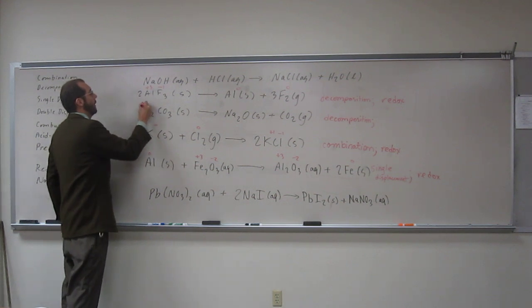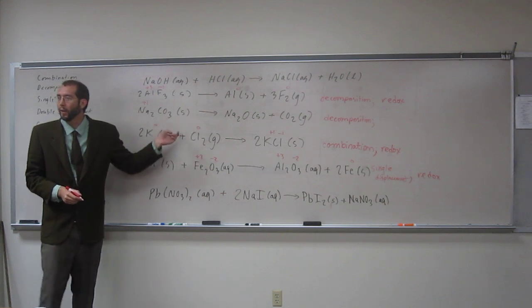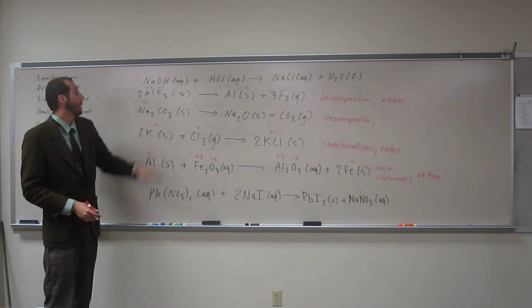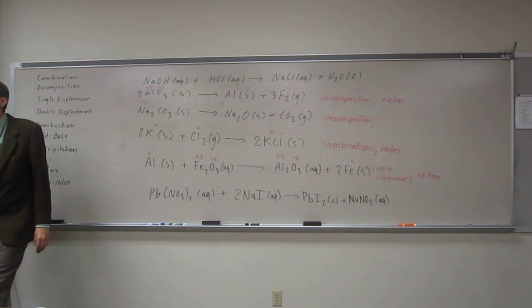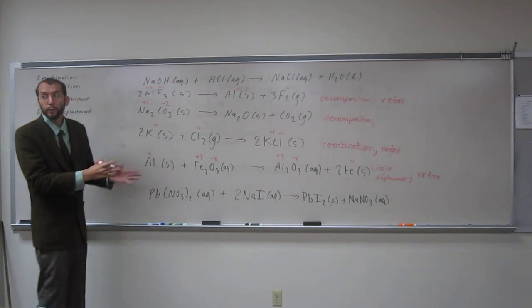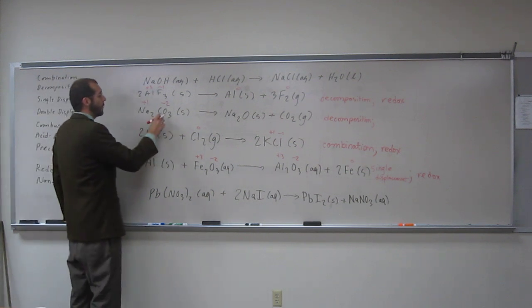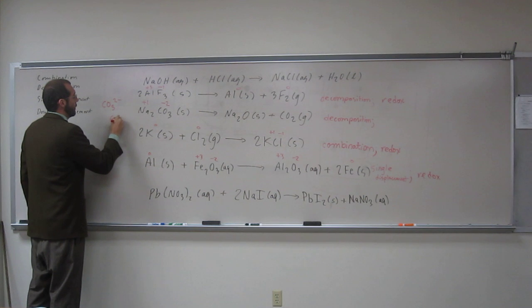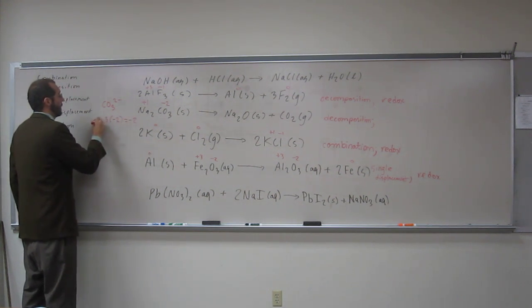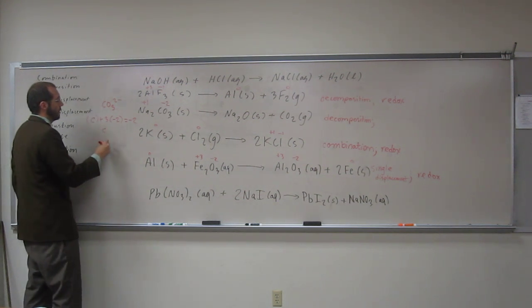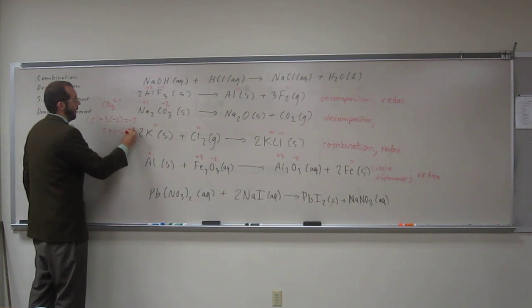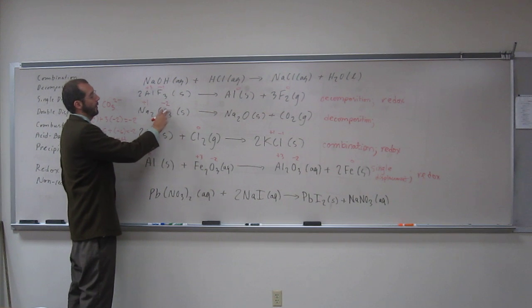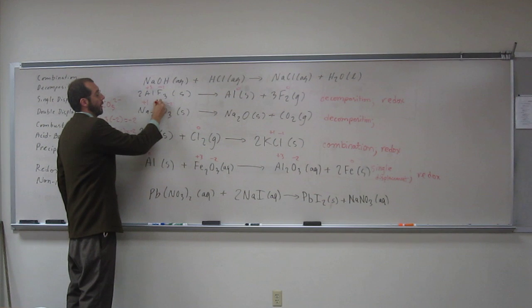Sodium is always plus one. If you remember the carbonate, that's a polyatomic anion with a minus two charge because there are two sodiums attached to it. So carbonate is minus two overall. For CO₃²⁻, oxygen is always minus two and there are three of them, so that's minus six. Then carbon: C plus negative six equals negative two, so carbon equals plus four.